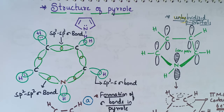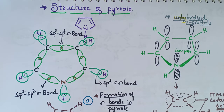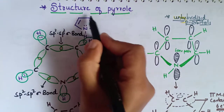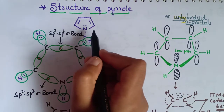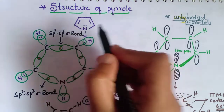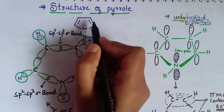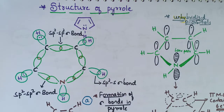In this video we are going to learn about the structure of pyrrole in detail. We already know that pyrrole is a five-membered ring with one, two, three, four carbon atoms, and one carbon atom is replaced by nitrogen. This is the structure of pyrrole, and nitrogen consists of a lone pair of electrons.